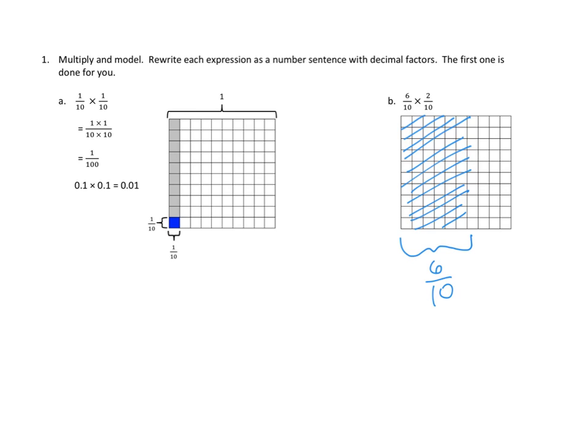Now, remember, part of the instructions here are to express a number sentence with decimal factors. So again, I'm going to tell you that the beginning factor, six-tenths is 0.6, times something else, equals something else. I'll let you guys work on that part. Let's take a look at problem number 1c.